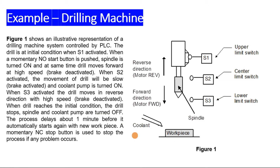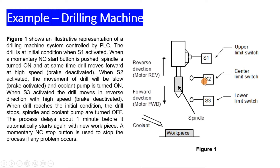We go to the example of a drilling machine using a step sequence, and we are going to transform it into a ladder logic diagram. Figure 1 shows an illustrative representation of a drilling machine controlled by the PLC. The drill at its initial condition is at S1. When a momentary normally-open start button is pushed, the spindle is turned on and at the same time the drill moves forward at high speed, meaning the brake is deactivated. When S2 is activated — meaning the drill has moved from S1 to S2 — the movement of the drill will be slow, meaning the brake is activated.